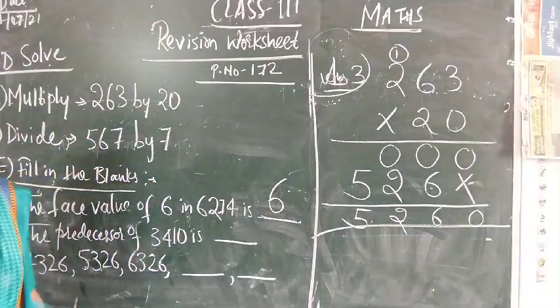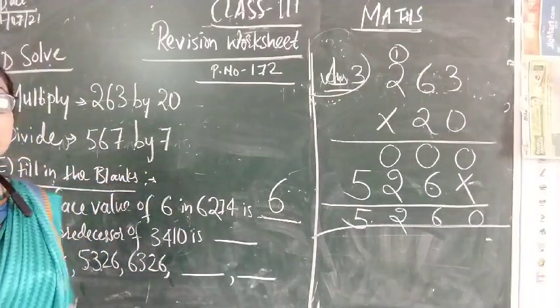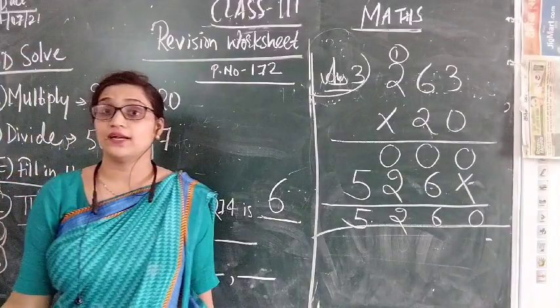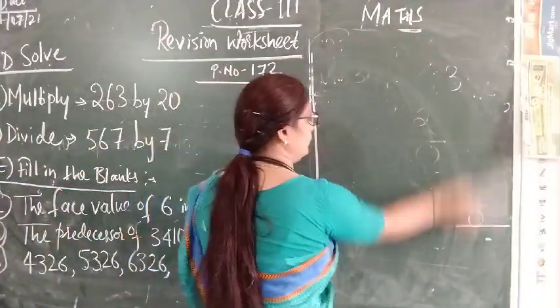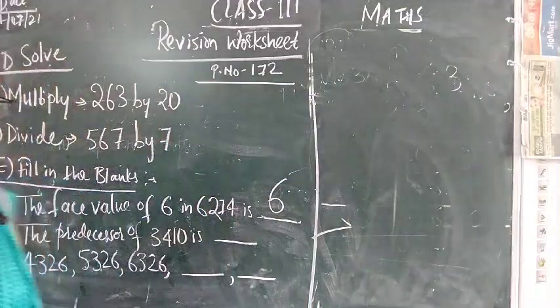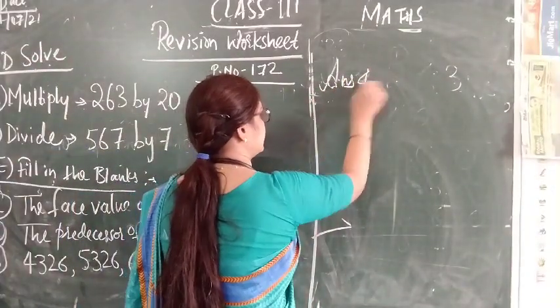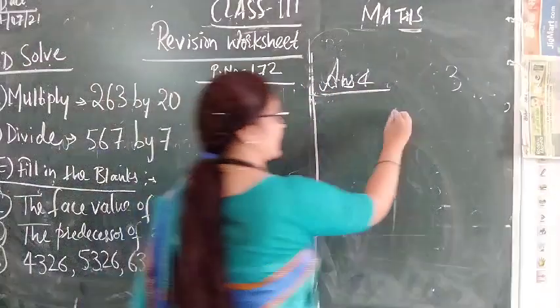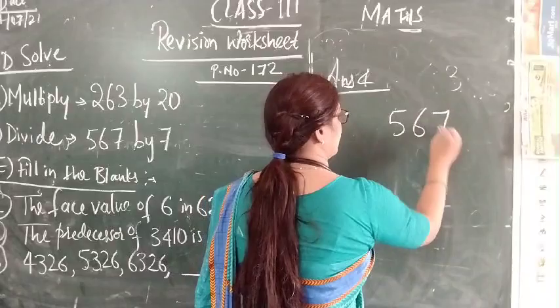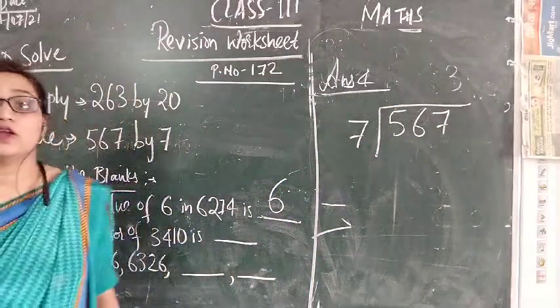Now next question is divide 567 by 7. Answer number 4. 567 divided by 7.